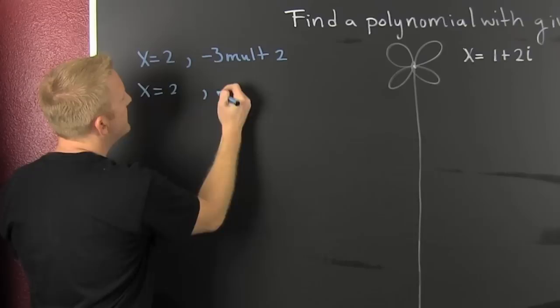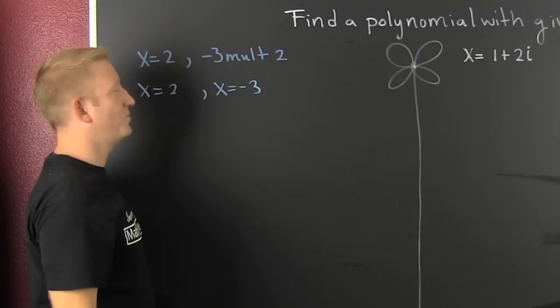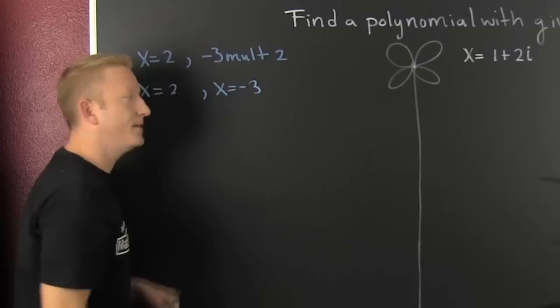I want the zero to be two and minus three with multiplicity two. What do you do? Let's just talk about what's happening here. This says that x is equal to two and x is equal to minus three, but what is this multiplicity bigger than one business? That means it's a zero more than one time. It's a zero how many times? Two times.